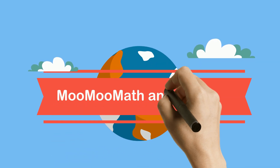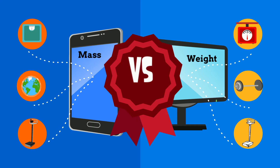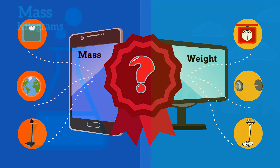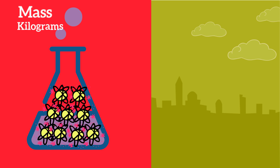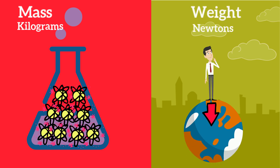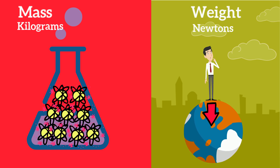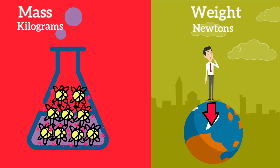Welcome to MooMooMath and Science and Mass vs Weight. Isn't mass and weight the same thing? Not really. The mass of an object is the amount of matter an object contains, while weight is the force of the gravitational attraction the object feels towards another object, like the earth's center.